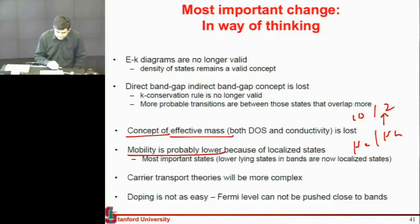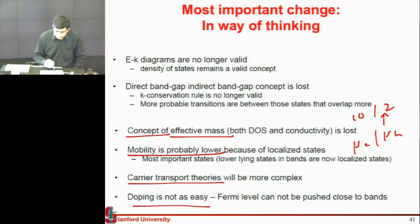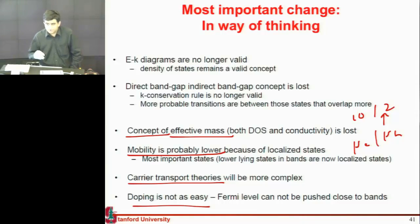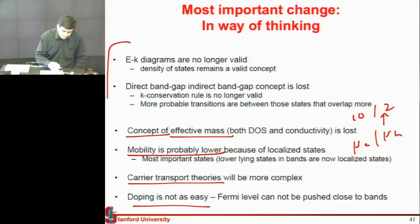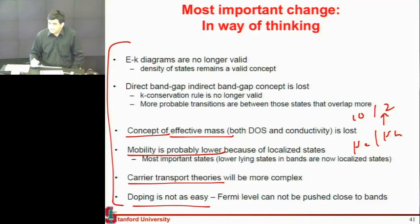Describing the transport becomes complex. It's not easy to dope these materials because you have these tail states and they prevent you from reaching very close to the conduction band. So you enter a myriad of problems — and solving each of them is a big research challenge.